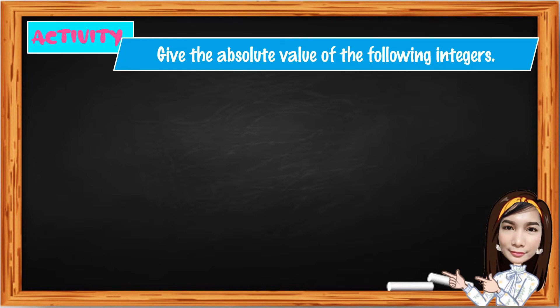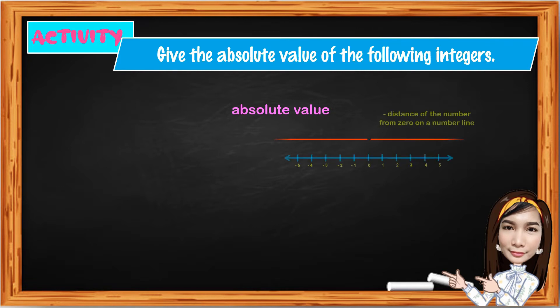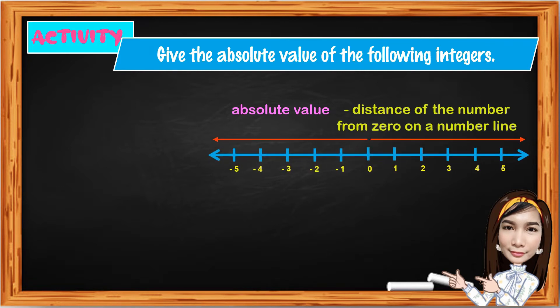Now, before we proceed, let's answer first the activity: Give the absolute value of the following integers. Mathematicians use absolute value to describe the distance of the number from zero on a number line. The distance is always a positive value.